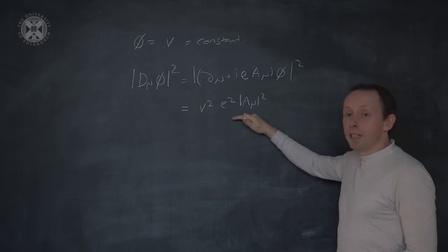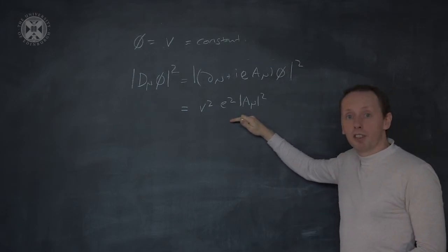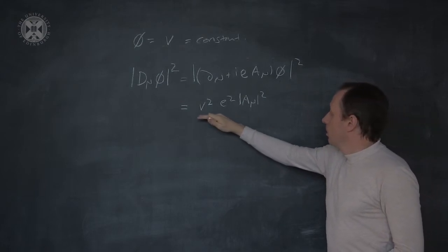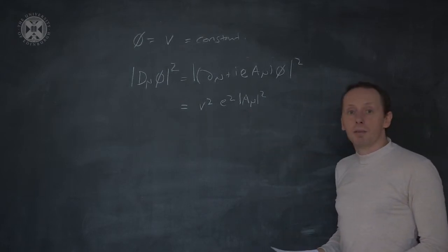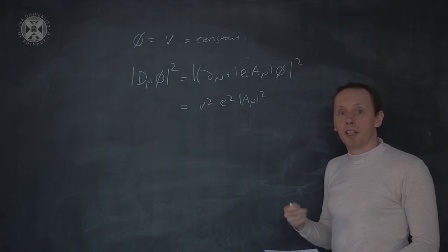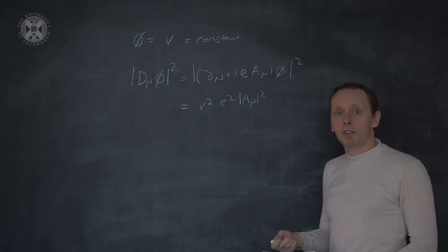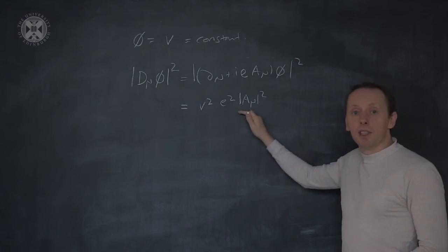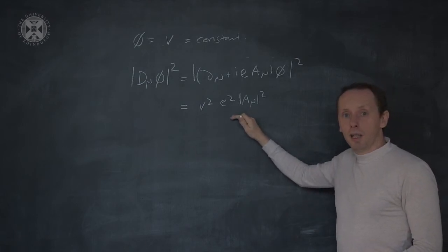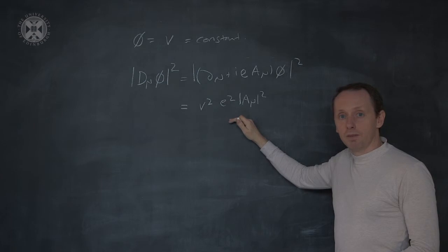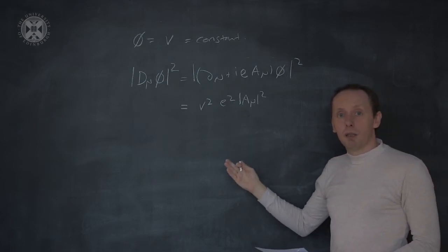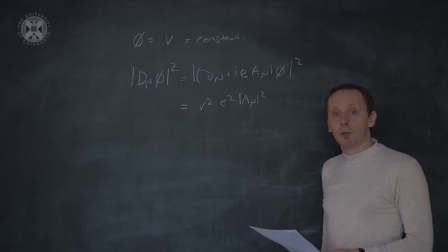Normally, electromagnetic waves have only transverse oscillations. When we introduce this mass term, the photon acquires an extra longitudinal degree of freedom. Our phi-2 degree of freedom has reappeared in the massive gauge boson.